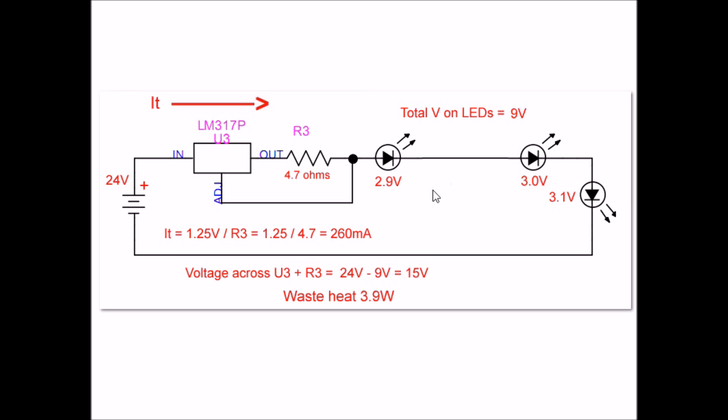We got it even worse. What if I jump my voltage up to 24 volts? My current stays exactly the same because that's still determined by the 4.7 ohm resistor and the 1.25 volts across R3. The voltage drop on my LEDs is still the same. For the drop across the LM317 and R3 combination: 24 volts minus 9 volts is 15 volts. 15 volts times 260 milliamps is 3.9 watts.